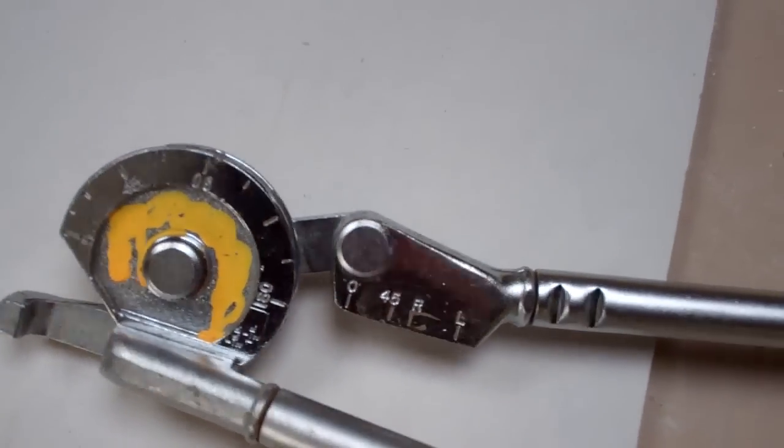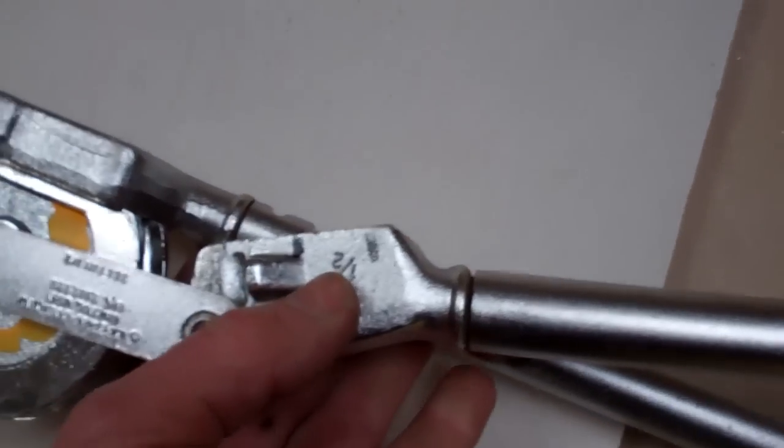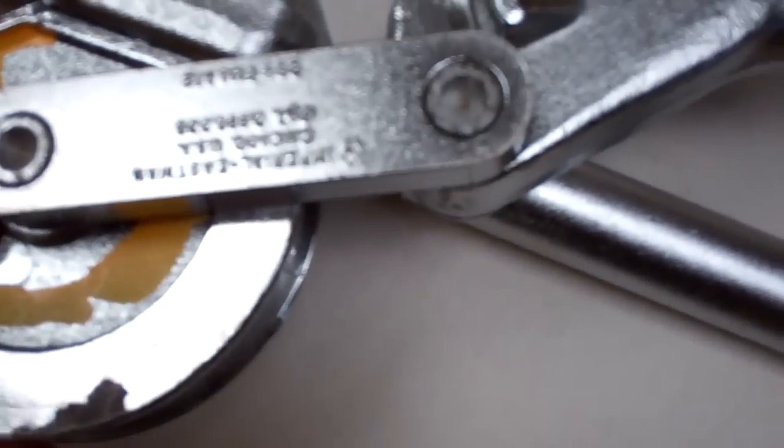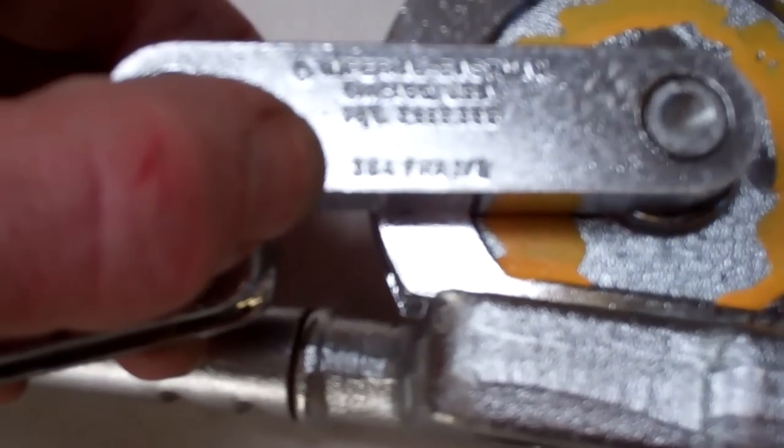Right, that's my 1.5 inch pipe bender made by Imperial Reisman. I think the model number is 364.